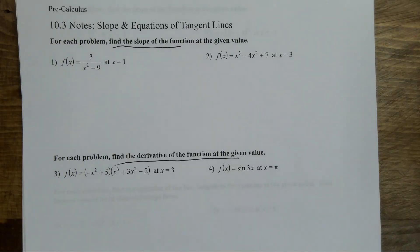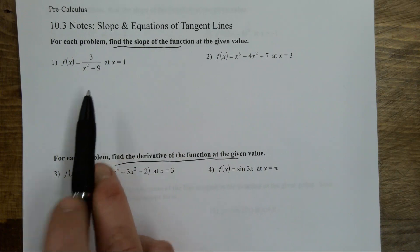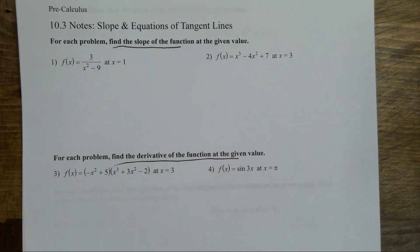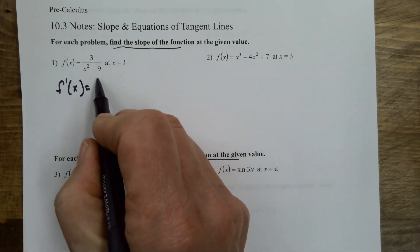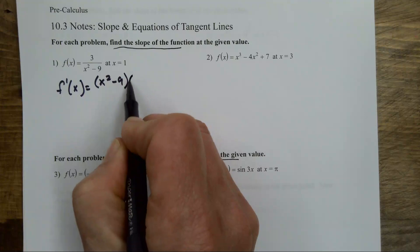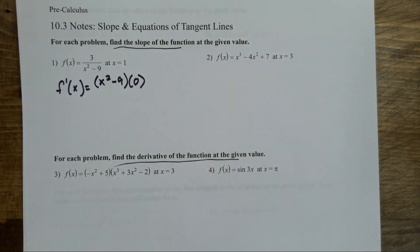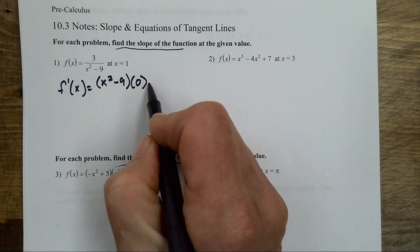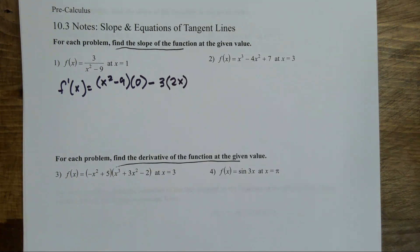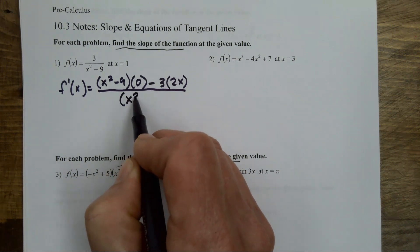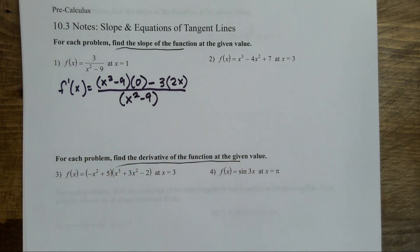My first one is a quotient rule. To do the quotient I go through that whole low d high minus high d low. F prime is the bottom times the derivative of the top, minus the top times the derivative of the bottom, high below, over the bottom squared.